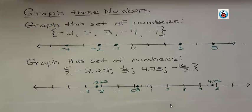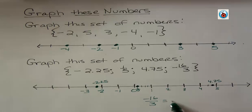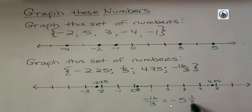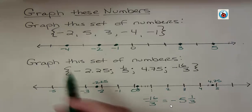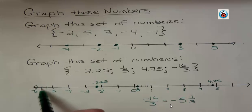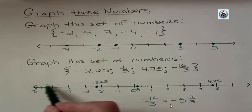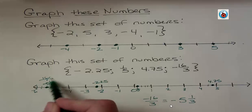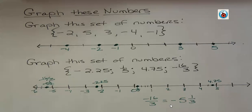And finally, negative 16 thirds. How would you do something like that? What you could do is change it into a decimal or a mixed number. Three goes into 16 five times with one left over, so we're talking about negative five and one-third. Here's negative three, here's negative four, here's negative five. If this was negative six and I thought about that as being in thirds, I'm negative five and an additional one-third back — so right here at negative five and one-third, or negative 16 thirds. If you have trouble graphing something, making it into a mixed number or a decimal is going to be helpful. Have a fantastic day.